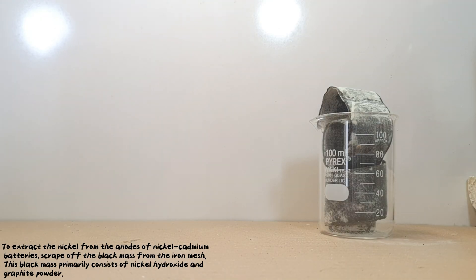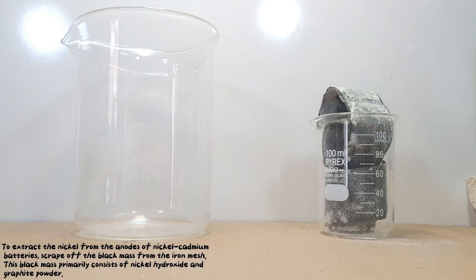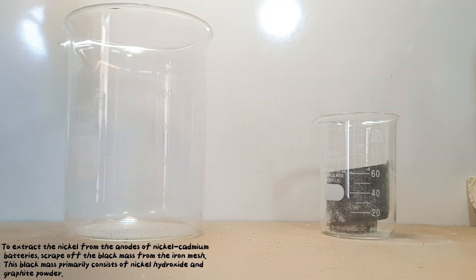To extract the nickel from the anodes of nickel cadmium batteries, scrape off the black mass from the iron mesh. This black mass primarily consists of nickel hydroxide and graphite powder.